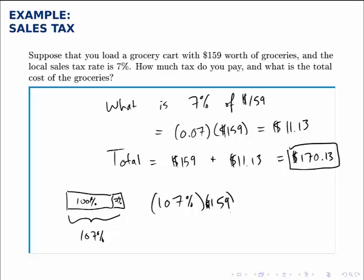well we need to write the 107% as a decimal, but that's nothing more than 1.07. Multiply that by 159, and you find that you get the same answer as the first part, $170.13.